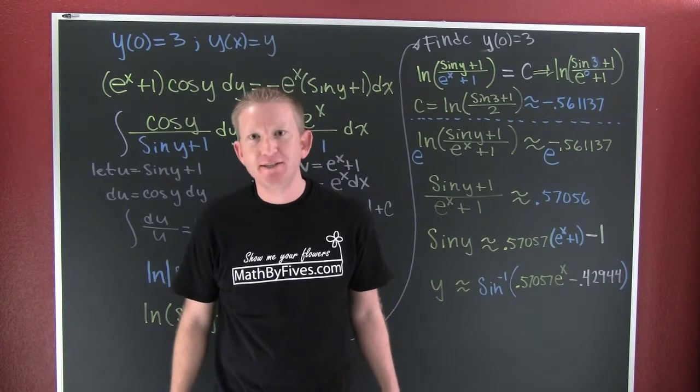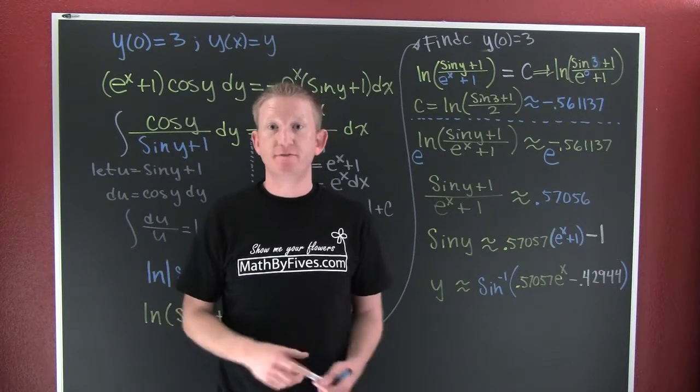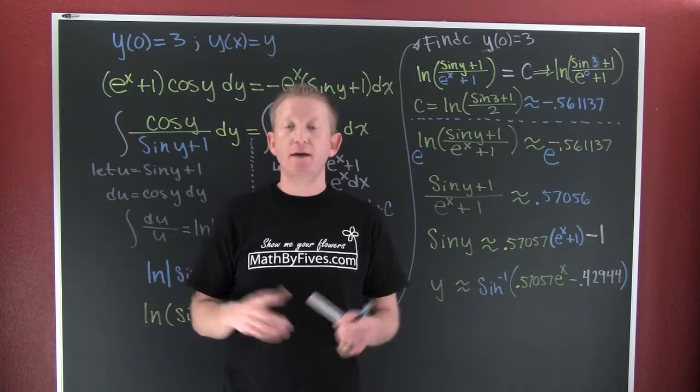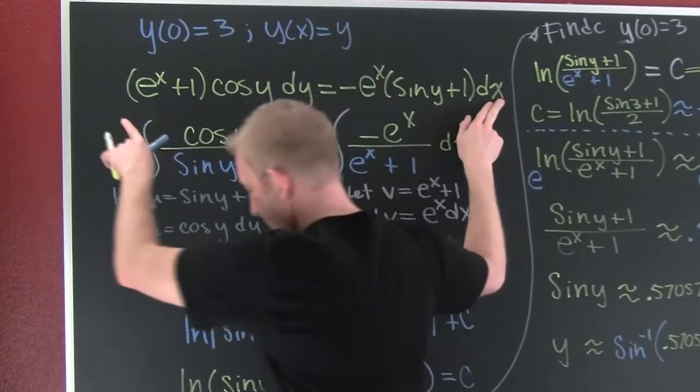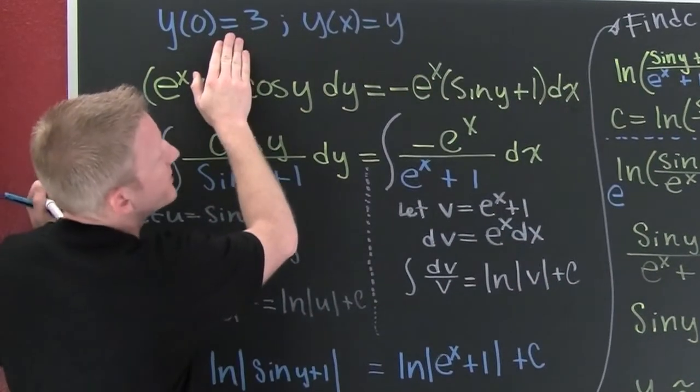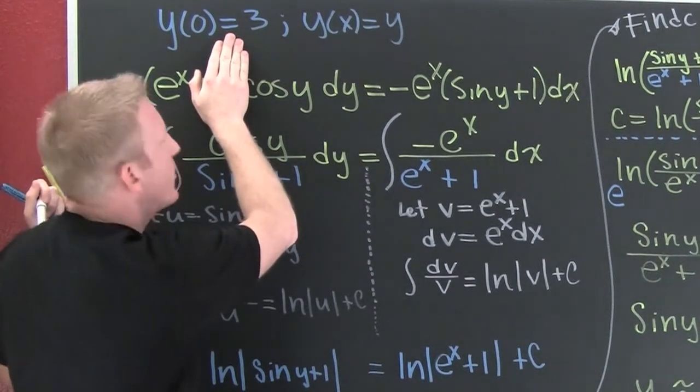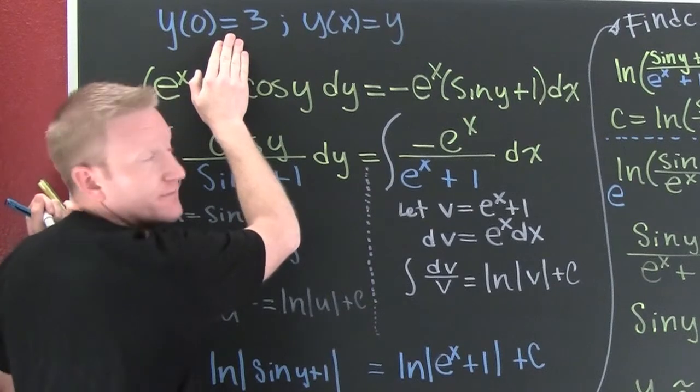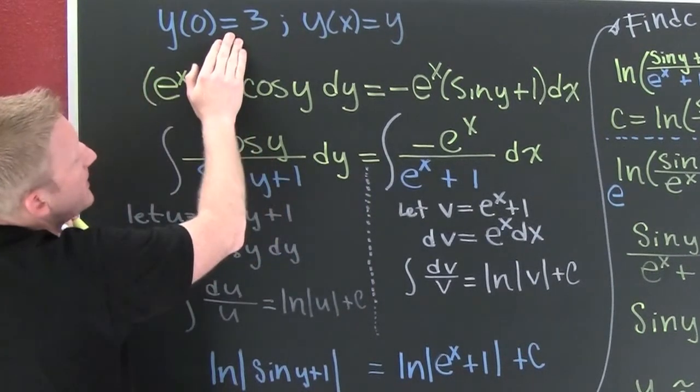Now, I don't want to be accused of doing the easy ones. This is our second example in separable differential equations. So what are we going to want to do? We're going to want to separate our differential. Here on this one, we have some initial constraints so that we can find an exact, well, a roundabout with decimal approximations function of x for y.